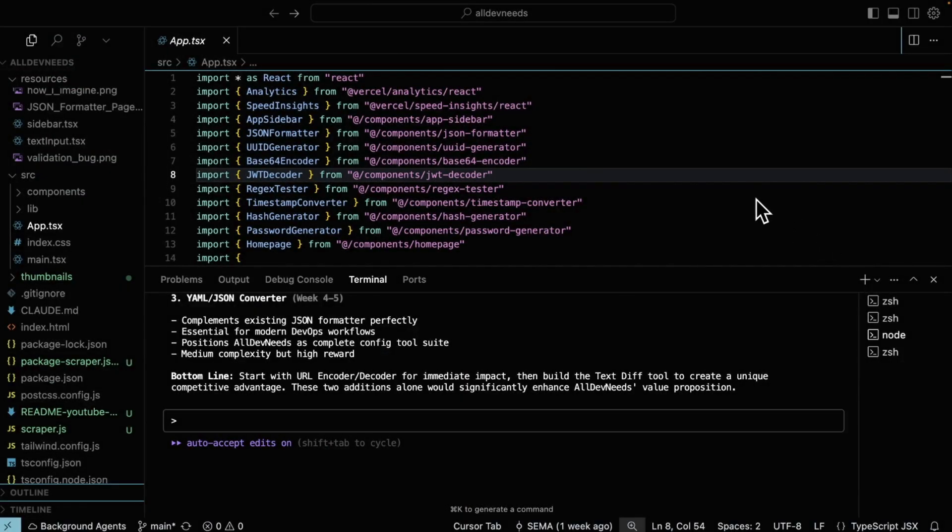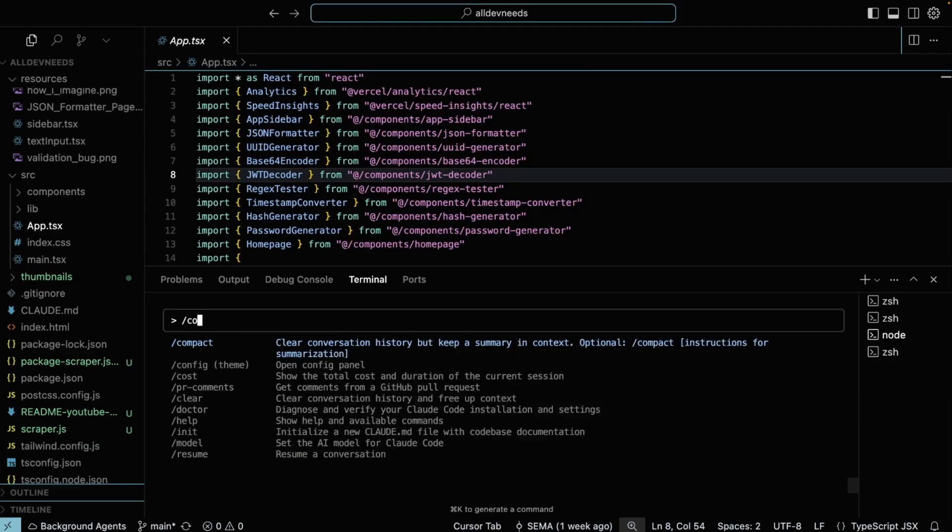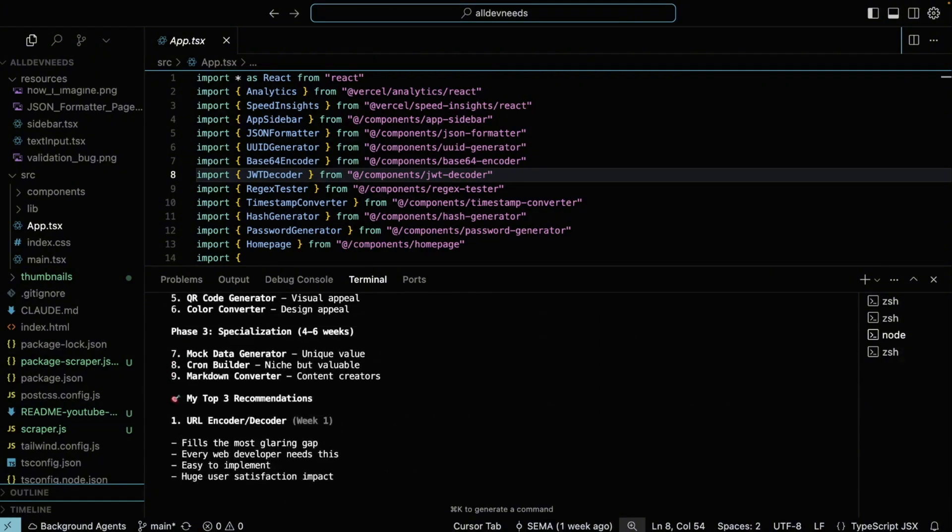So tip number one is to take control over the context you attach. Use clear command when switching tasks or getting into a messy chat. You can also use the compact command when the context is still helpful, but you want it to be lighter. Claude actually does compact automatically. When your thread gets too long, you've probably seen this message.